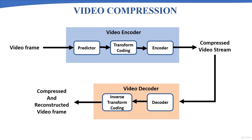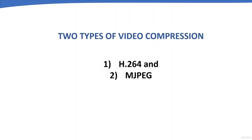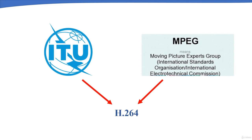When an operator requests compressed video data, a video decoder decompresses the stored data back into its original recorded format. There are two major types of compression: H.264 and MJPEG. We will focus on H.264, as it is the most used video compression technology in CCTV systems. H.264 is a codec jointly developed by the International Telecommunication Union and the MPEG standards group.